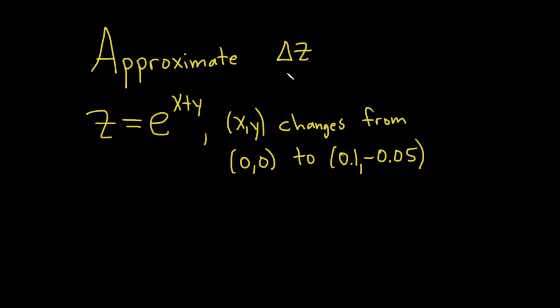Hi, in this problem we're going to approximate the change in z, which is delta z, of this function as x,y changes from (0,0) to (0.1, -0.05).